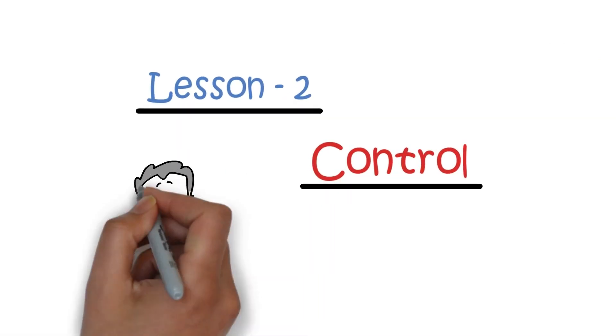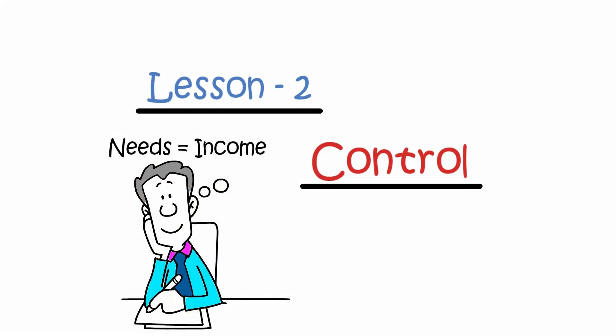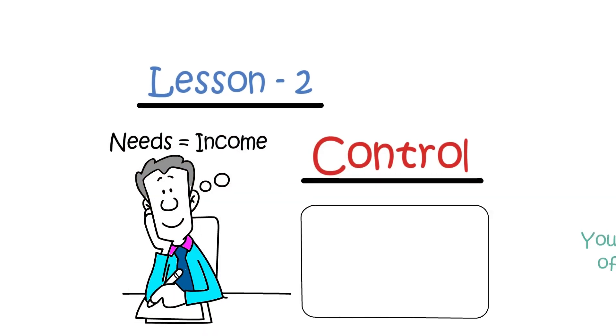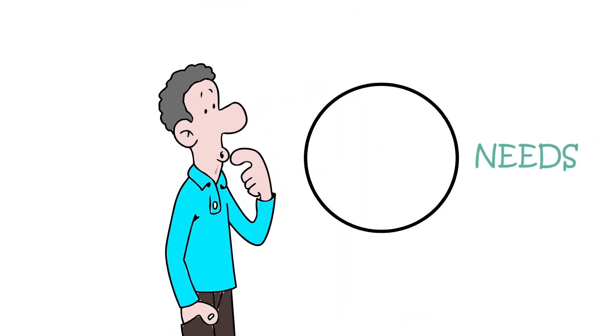This leads us to lesson number two, control. You must understand that your day-to-day needs will always equal your income. Remember from rule number one, that you only have 90% of your income to spend. You will be surprised to see that you can actually squeeze your needs into that 90%.